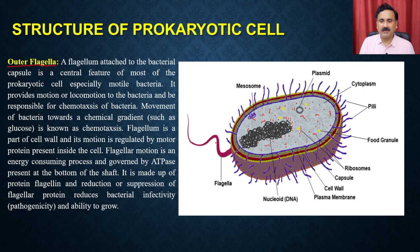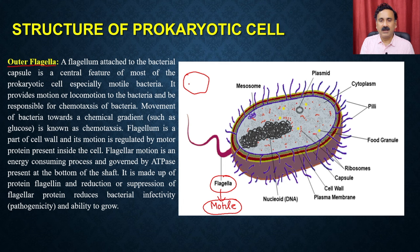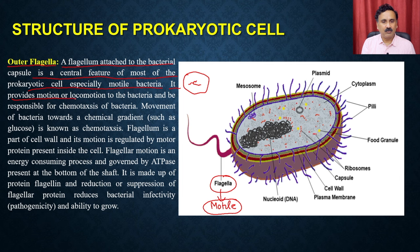The first substructure is the flagella. Flagella is present in those bacteria which are actually motile — it is required for motion within the bacteria. You can see that if a bacteria is present in a drop, it can actually use this flagella to swim around. Flagella is attached to the bacterial capsule and is a central feature of most prokaryotic cells, especially the motile bacteria. It provides locomotion and is responsible for the chemotaxis of the bacteria.